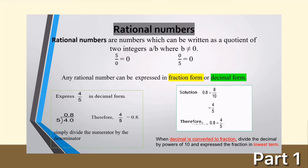Let's see what happens if the denominator is zero. For example, five divided by zero — is it equal to zero? No, because zero times zero is not equal to five; zero times zero is equal to zero. So this is not a rational number. How about zero divided by five? Let's check: zero times five is equal to zero, so therefore this is a rational number.